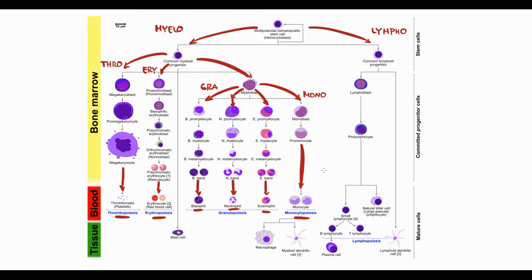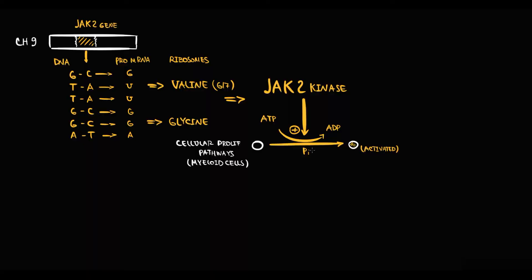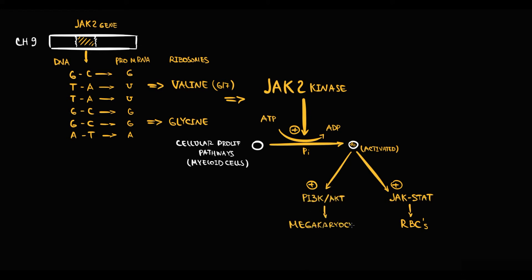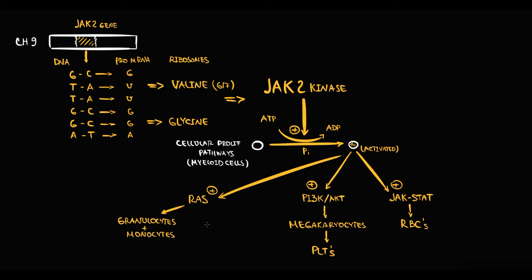Some pathways are more specific to a certain type of cell. For example, JAK2 kinase by activation of the JAK-STAT pathway stimulates mostly the production of red blood cells. By activation of the PI3K-AKT pathway, JAK2 kinase stimulates the production of megakaryocytes, from which platelets are formed. By activation of the RAS pathway, it stimulates the production of granulocytes and monocytes — specifically monocytes, neutrophils, eosinophils, and basophils.